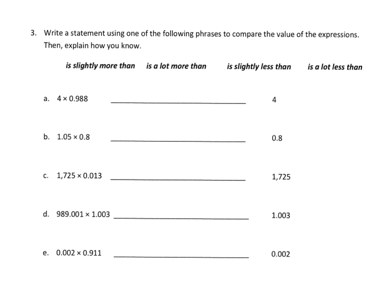For this section, we fill in the blank using the phrases: is slightly more than, a lot more than, is slightly less than, or a lot less than. We look at the factor that is different. I have 4 on both sides, so I look at the other factor. It's less than 1, but it's pretty close to 1, so I'm going to say it is slightly less than. The statement is: 4 times 988 thousandths is slightly less than 4.